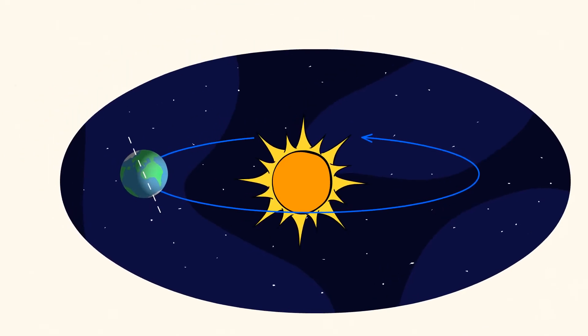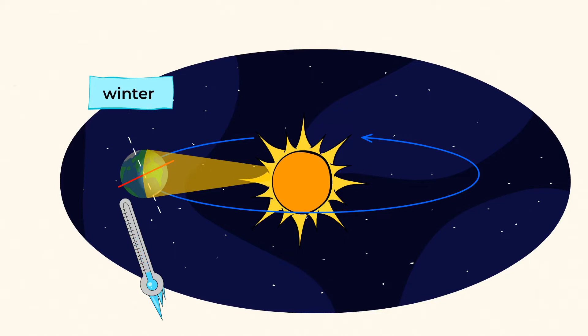Winter is when part of the earth is tilted away from the sun. That part is getting indirect sunlight, meaning days are shorter, temperatures are colder, and in many places, it even snows. I love snow.